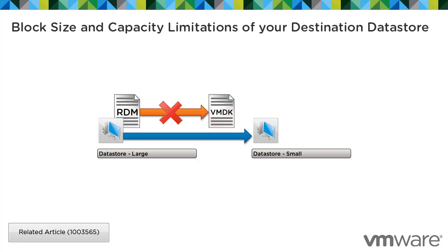For example, if your destination data store is a VMFS 3 created with a 2MB block size and the RDM or virtual disk being converted or migrated is 640GB, the process fails. A VMFS 3 block size of 4MB or higher is necessary to store files larger than 512GB. For more information, see Block Size Limitations on a VMFS Data Store.